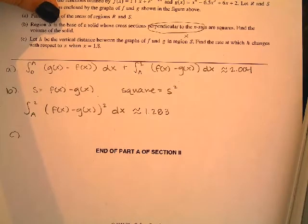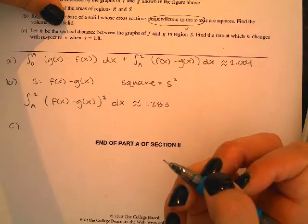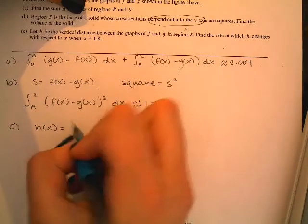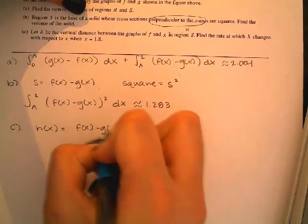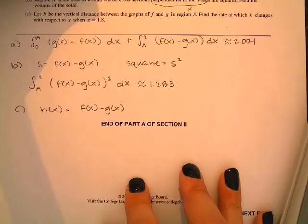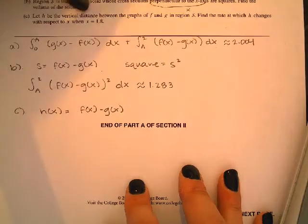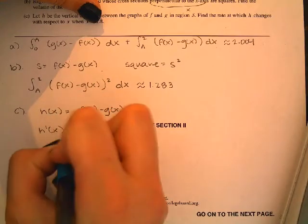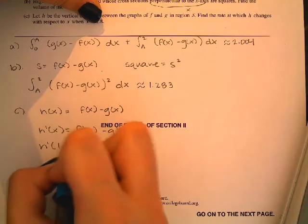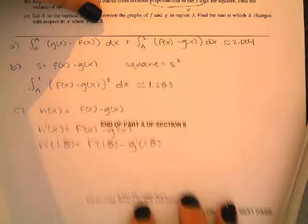Let H be the vertical distance between the graphs of F and G, and it's in region S. So I'm going to say H of X is, and then the vertical distance is just going to be the difference between the two. So I'm going to do F of X minus G of X. All right. And so they want the rate of change for H, which is the derivative at a specific moment, right? So at 1.8. So H prime of X is going to be F prime minus G prime. And then the rate of change at 1.8 is going to be F prime of 1.8 minus G prime of 1.8. Okay.